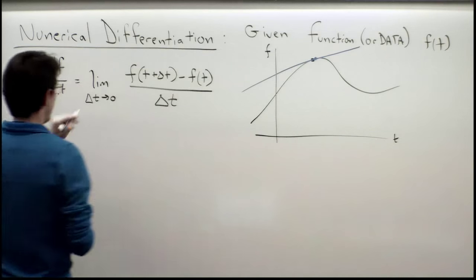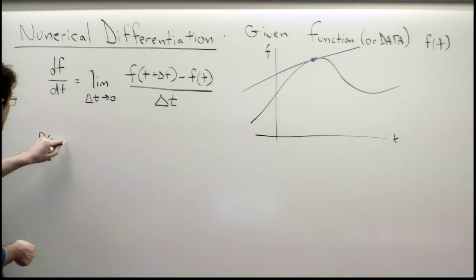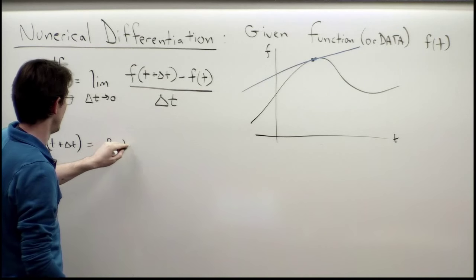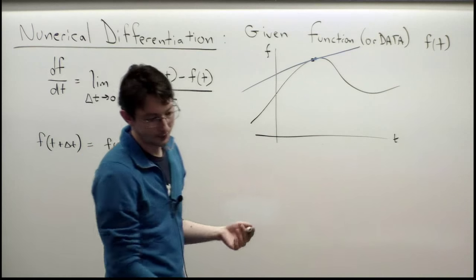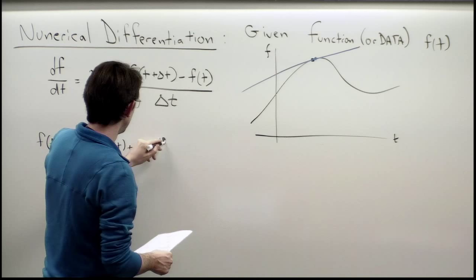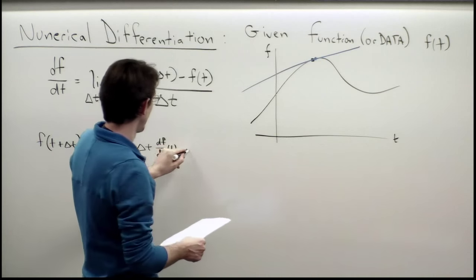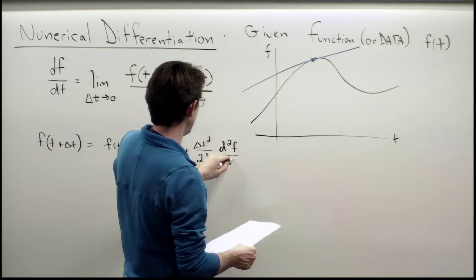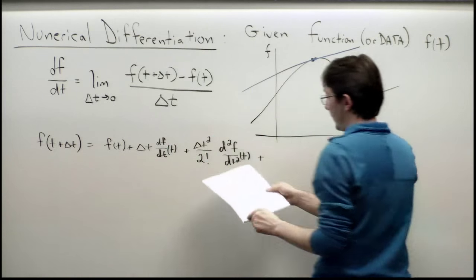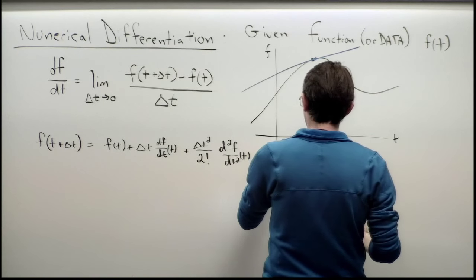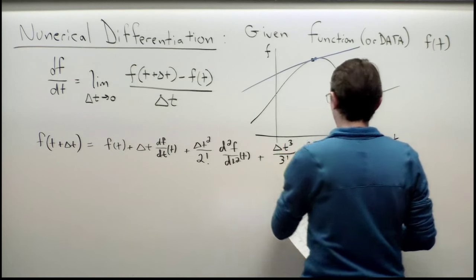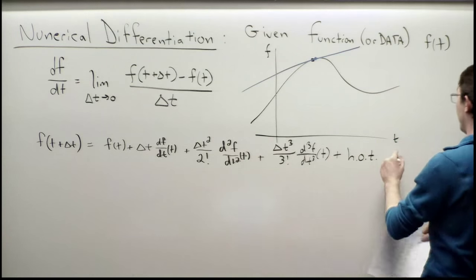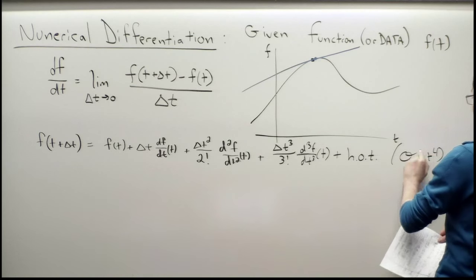We're going to take our function f(t + delta t) and Taylor expand in terms of delta t. We get: f(t) + delta t · f'(t) + delta t² / 2! · d²f/dt² evaluated at t, plus delta t³ / 3! · d³f/dt³ at t, plus higher order terms of order delta t to the fourth.